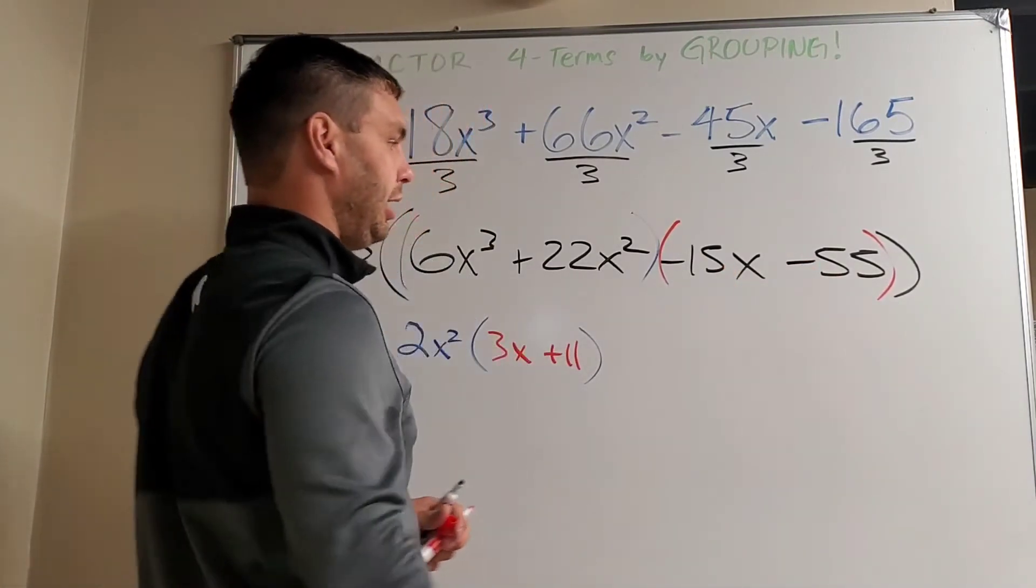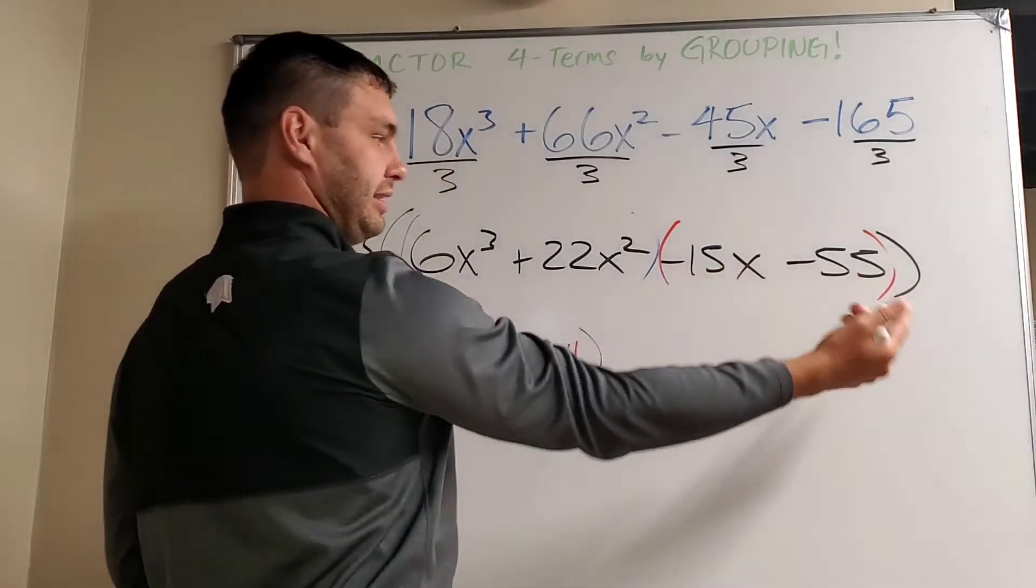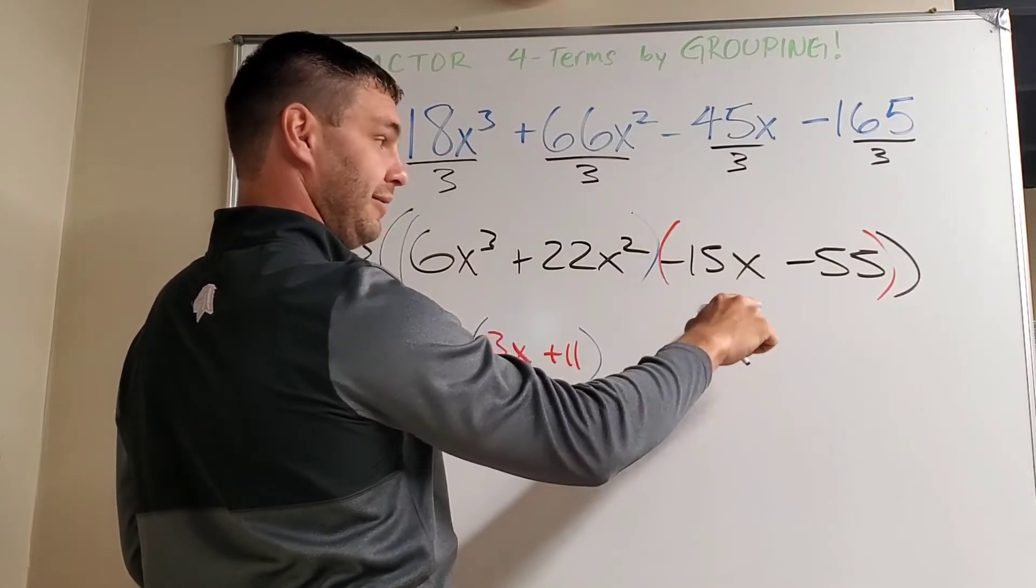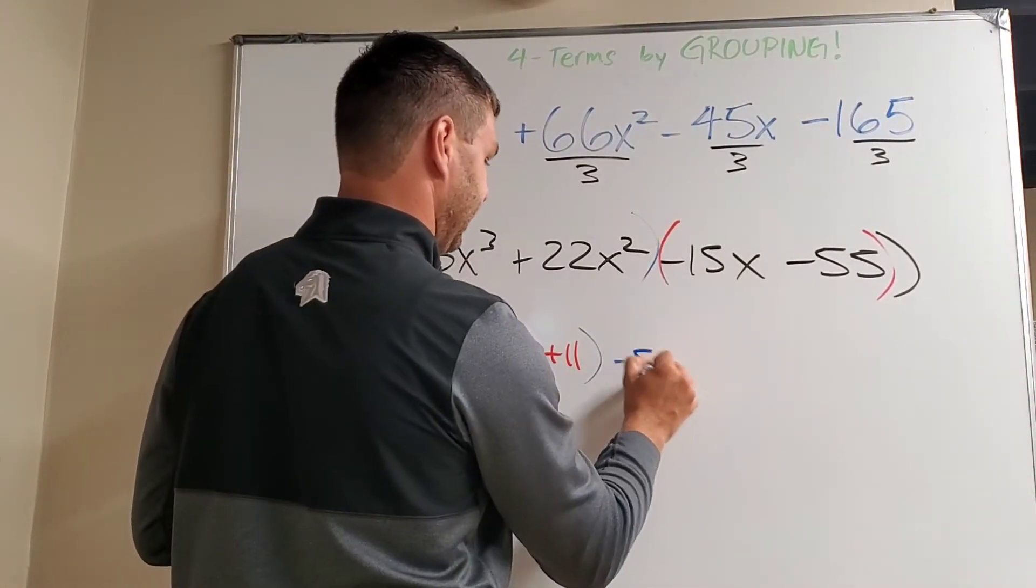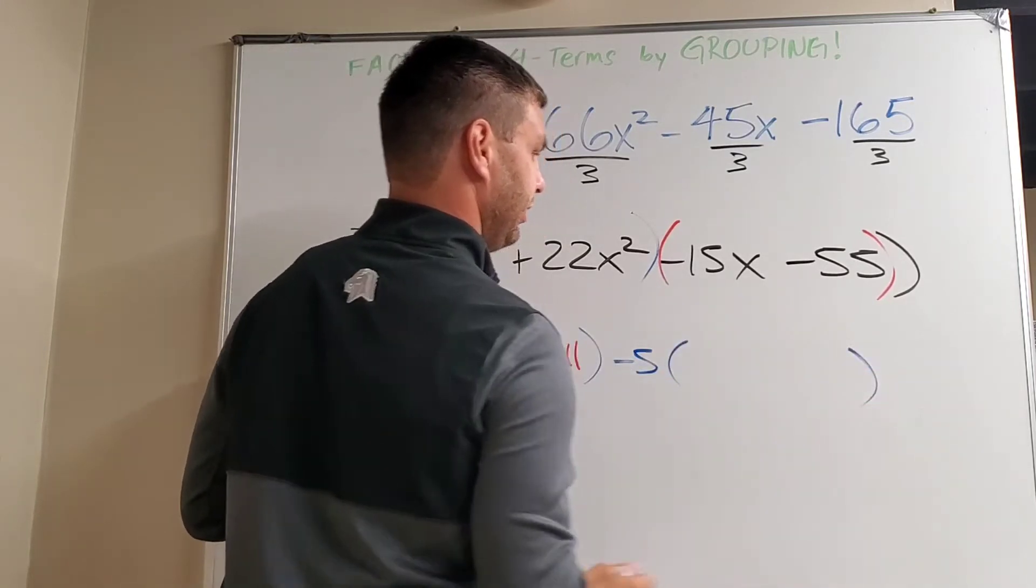In the red group, what I'm going to do is take out, let's see, it looks like maybe a negative 5, I think, is what I can take out of that. So if I take out negative 5, then left over,